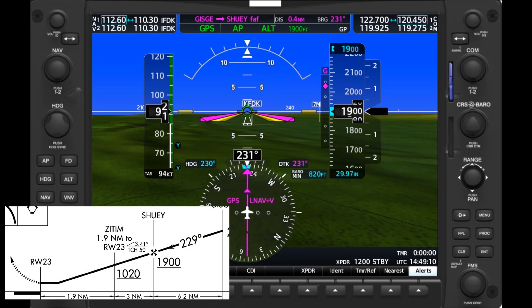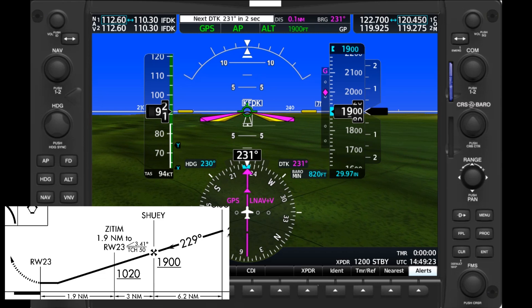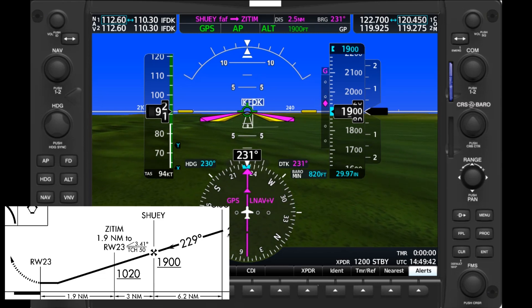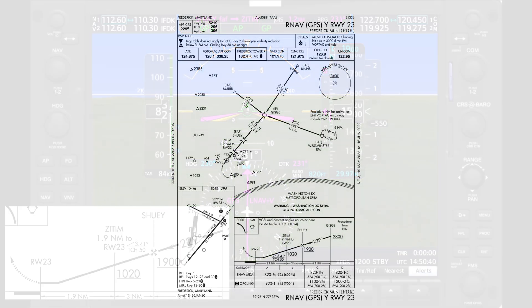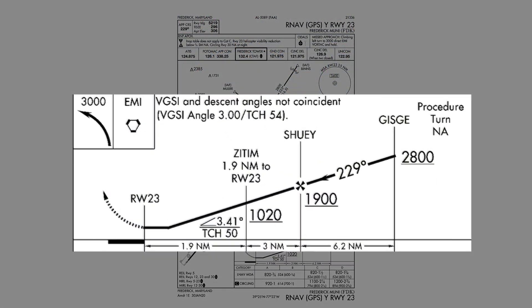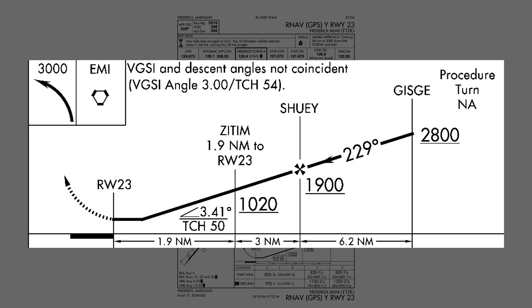This can be confusing when you're flying, because you're so often used to starting a descent at the final approach fix, and it can leave you wondering if there's something wrong with your GPS or autopilot setup. The FAA plate doesn't help much because you don't see anything about the delayed start to the advisory glide path — because again, the FAA doesn't design the advisory glide path. However, you do get a clue by looking at where the FAA places the vertical descent angle. Here, it's after ZITP, showing that the angle only applies after the ZITP fix and doesn't apply to the segment from Shuey. If it did, you'd find the symbol placed just after the final approach fix.